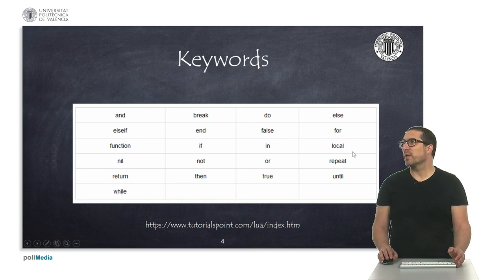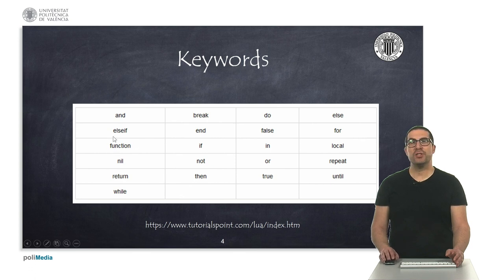We can use the keyword local to declare local variables. And we have keywords to perform Boolean operations with and, or, or not. When we work with functions, we will work with function keyword and also the return keyword.